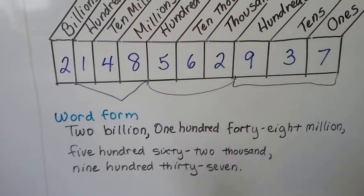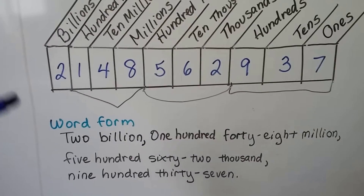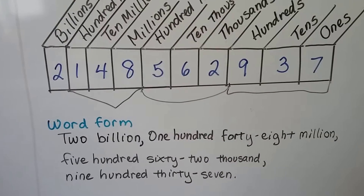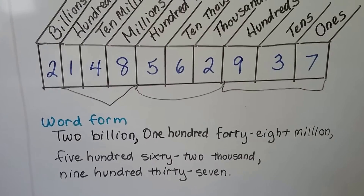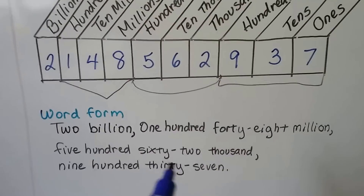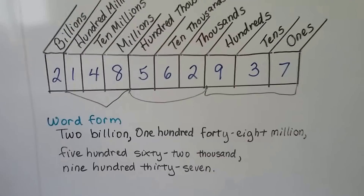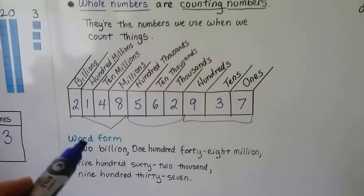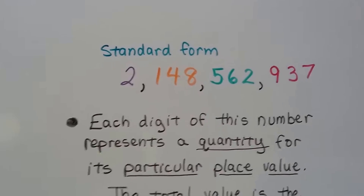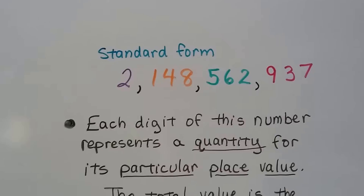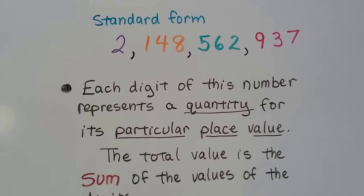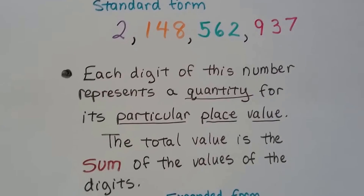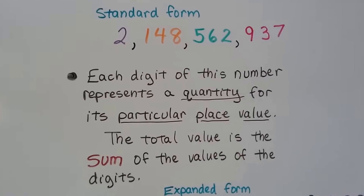Now in word form, which we'll also talk about more in the next video, this would be two billion, one hundred forty-eight million, five hundred sixty-two thousand, nine hundred thirty-seven. Standard form is just writing the number with commas between each third digit. Each digit of this number represents a quantity for its particular place value, and the total value is the sum of the values of the digits.